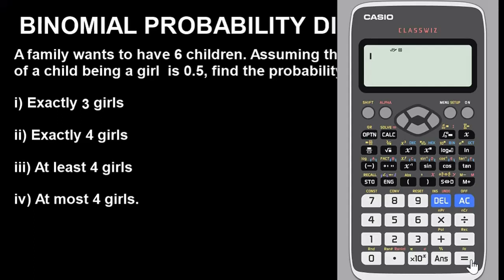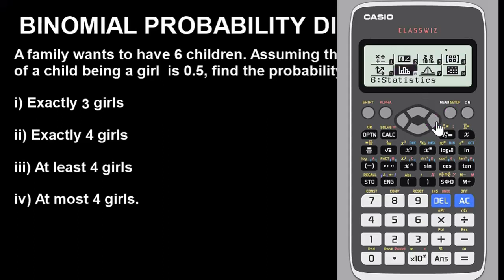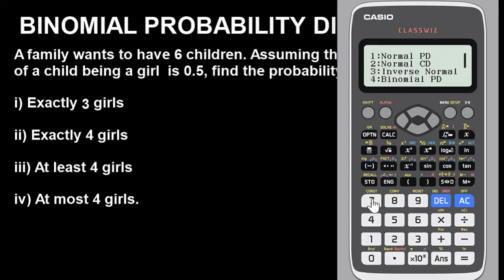Now the next thing is to put the calculator in the right mode to solve this kind of problem. Press Menu and choose the Distribution mode, which is option 7. Press 7. It will show you various options. Since we want to solve binomial probability, you can see 'Binomial PD' listed, and if you scroll down you'll see 'Binomial CD'.